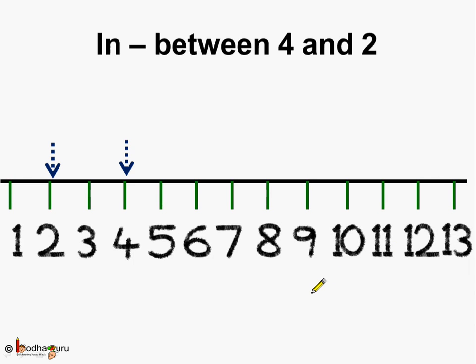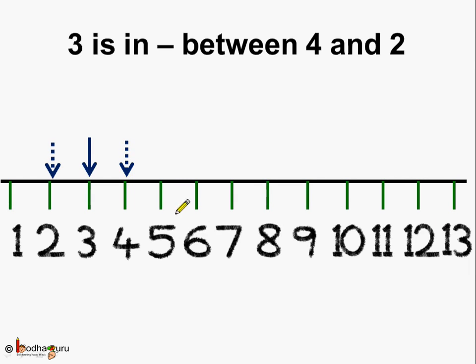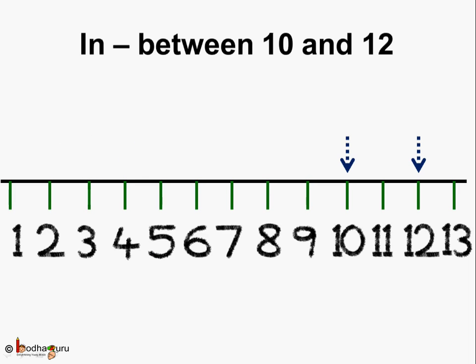What else we can find? We can also find what comes in between the two numbers. Let's say we want to find what comes in between 2 and 4. So, we will look at the in-between number. This is number 3. So, we can say between 2 and 4 comes the number 3. Okay? See here, 3 is in-between 2 and 4.